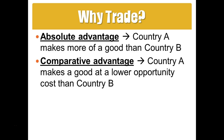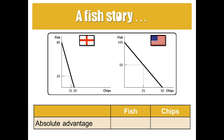To clarify this point, we're going to look at an example with England and the United States, pretending there are exactly two goods: fish and chips. England produces less of both goods than the United States. The U.S. has an absolute advantage in fish — it can produce 100 versus England's 80 — and in chips the U.S. can make 50 while England can only make 20. One might say the U.S. should make both, but that leaves out the idea of comparative advantage and relative efficiency.